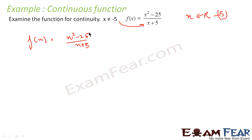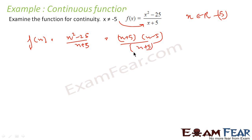So this becomes (x + 5)(x - 5) divided by (x + 5). I can cancel this. Why can I cancel this? Because x is never equal to -5. If that were not the case, I could not cancel. But since x is never equal to -5, I can cancel it. So my function becomes f(x) = x - 5. This is a polynomial function, so it has to be continuous.